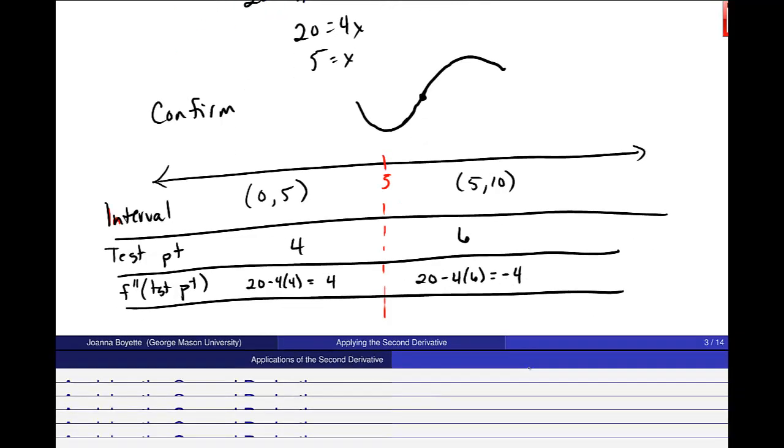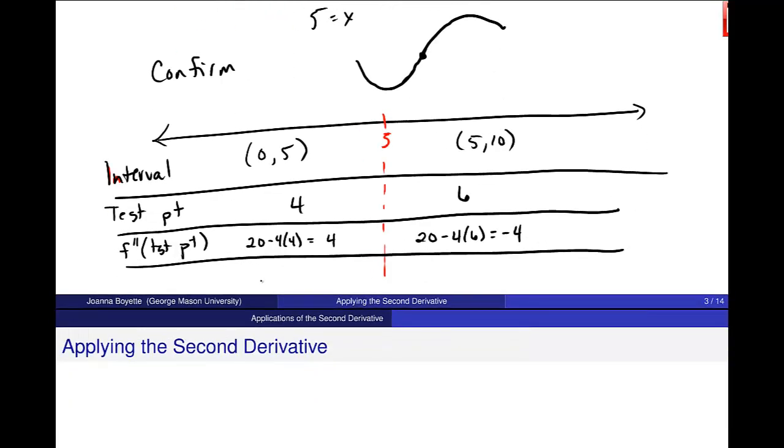So that's the value. This is a positive, and this is a negative. And that means I do and should be getting this picture where it's concave up here and concave down here.